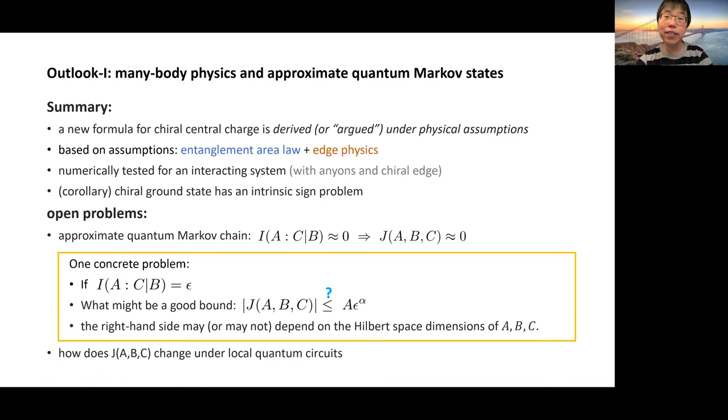Let me briefly summarize and mention some open problems. In the context of gapped many-body systems and chiral central charge, we derived a new formula for the chiral central charge based on two assumptions: one is on the entanglement area law and another is on the edge physics. Although our assumption is idealized by assuming precise quantum Markov chains, the numerical test does suggest the formula holds beyond that idealization. If you take our results, then a corollary would be that chiral ground states have an intrinsic sign problem. That's a byproduct.